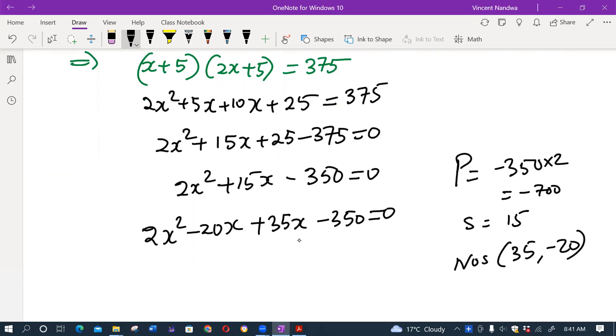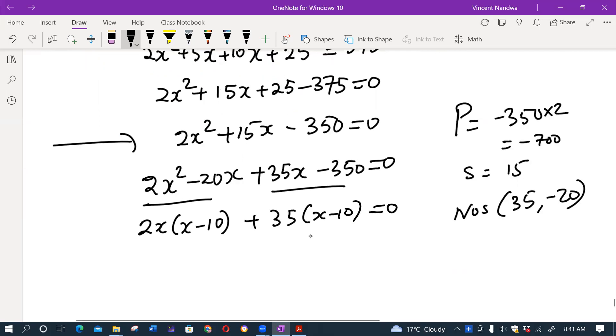Remember, you can either use quadratic formula here or any other method of solving quadratic equations that you like. I've picked the factorization method, but you can as well use completing the squares or quadratic formula. So do the pairing: 2x into (x - 10) plus 35 into (x - 10).